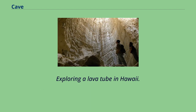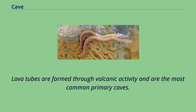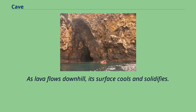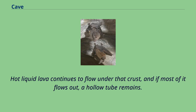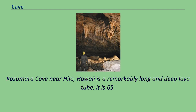Exploring a lava tube in Hawaii. Caves formed at the same time as the surrounding rock are called primary caves. Lava tubes are formed through volcanic activity and are the most common primary caves. As lava flows downhill, its surface cools and solidifies. Hot liquid lava continues to flow under that crust, and if most of it flows out, a hollow tube remains. Such caves can be found in the Canary Islands, Jeju-do, the basaltic plains of eastern Idaho, and in other places. Kazumara Cave near Hilo, Hawaii is a remarkably long and deep lava tube.